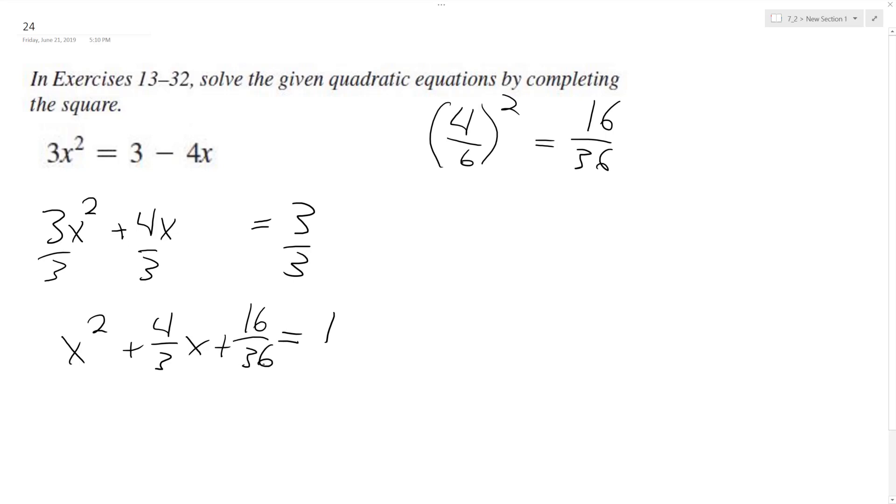This is equal to 4 over 6. 4, 16, 2. All right, so we end up with x plus 4 over 6 squared.